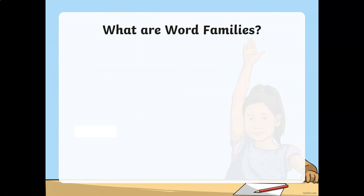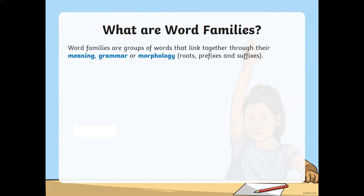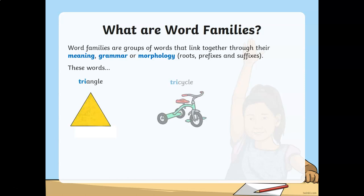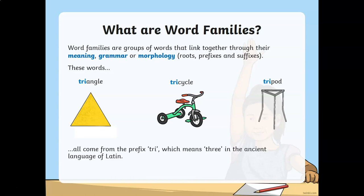What are word families? Word families are groups of words that link together through their meaning, grammar, or morphology — like roots, prefixes, and suffixes. For instance, triangle, tricycle, and tripod all have the same common root word, which is 'tri', and thus they belong to the tri family.